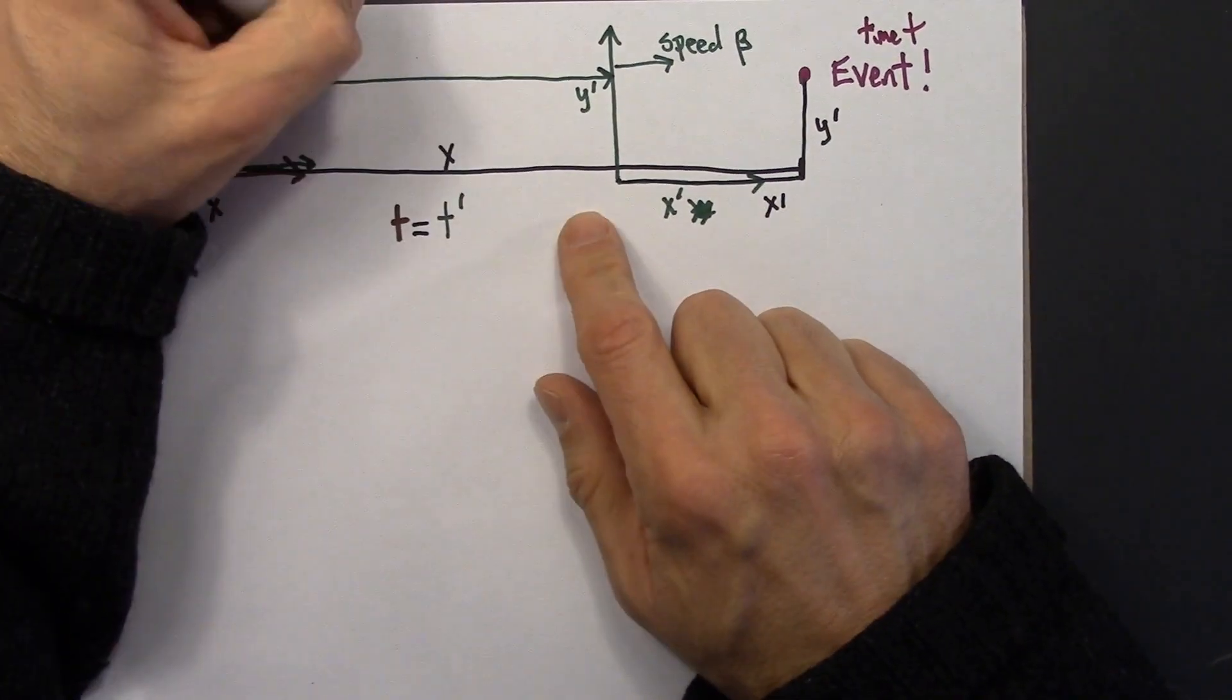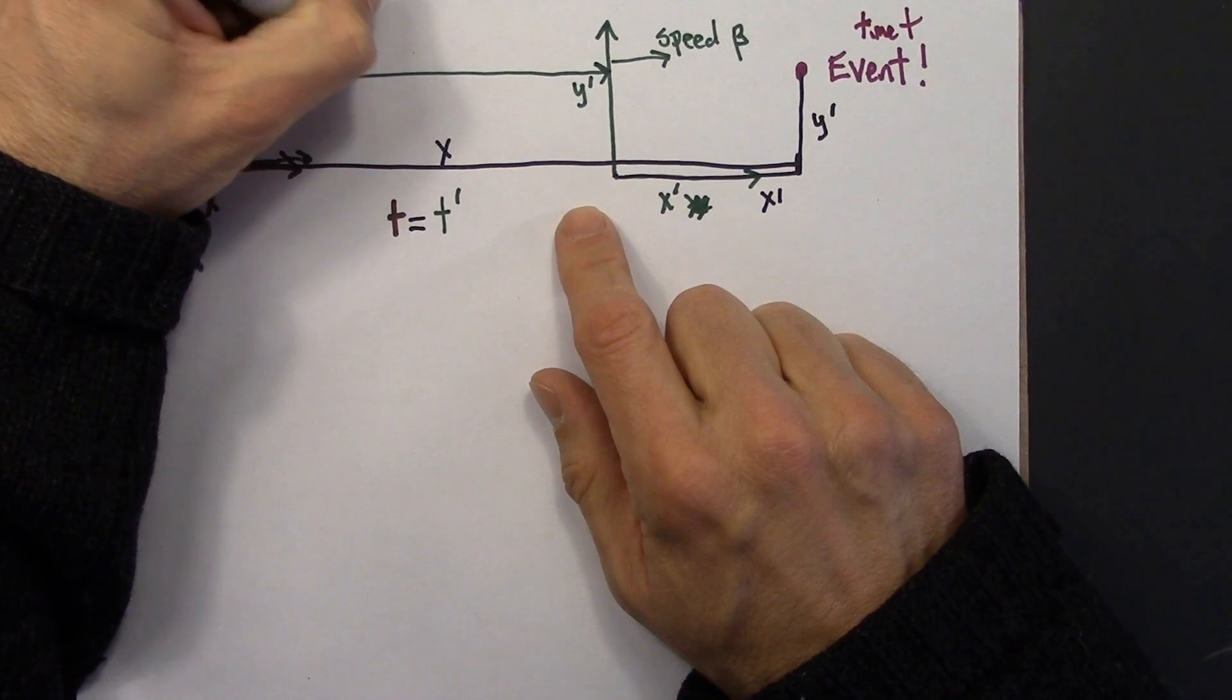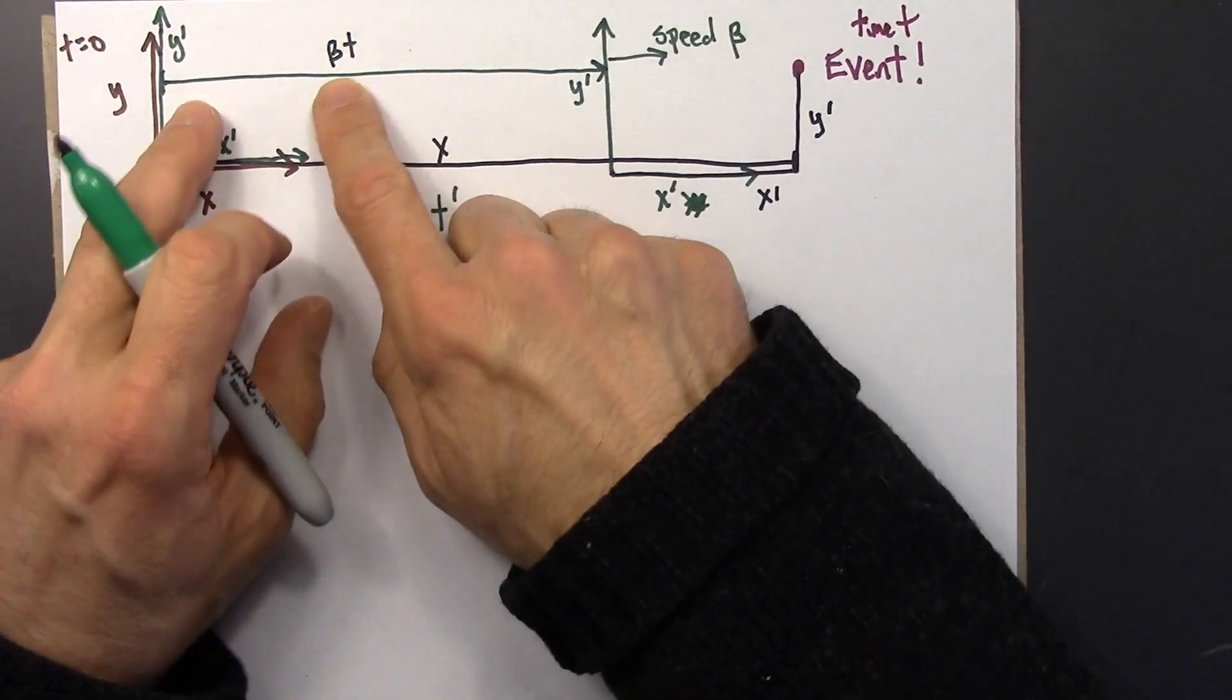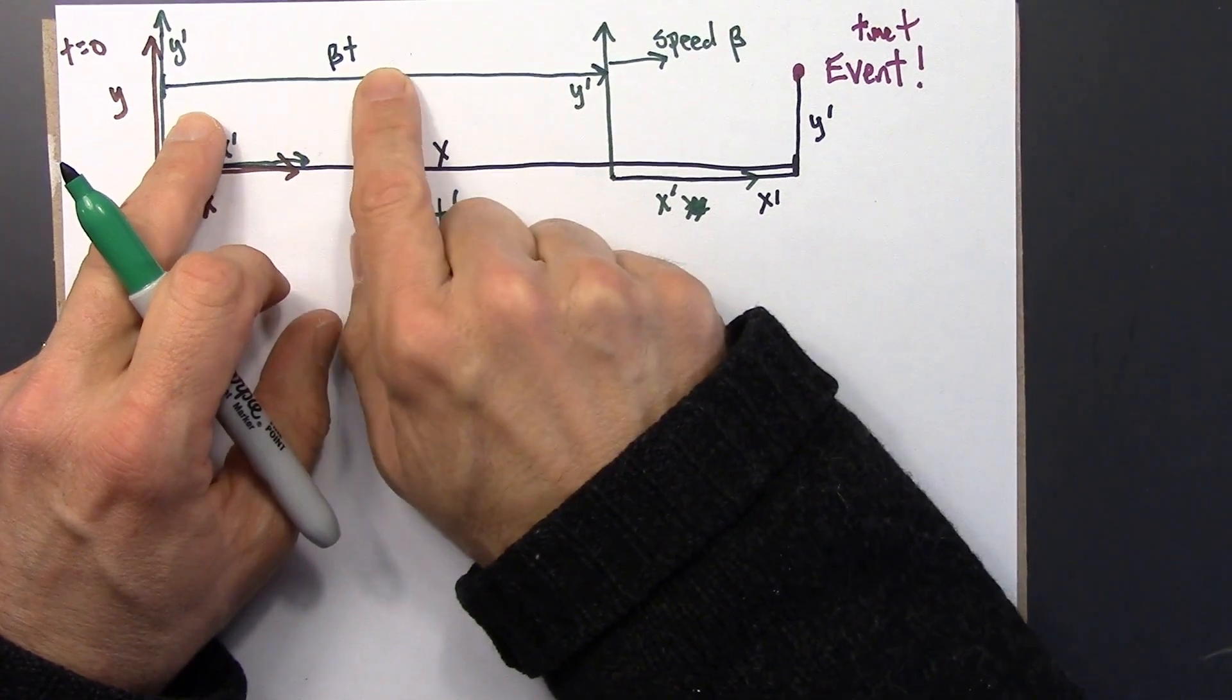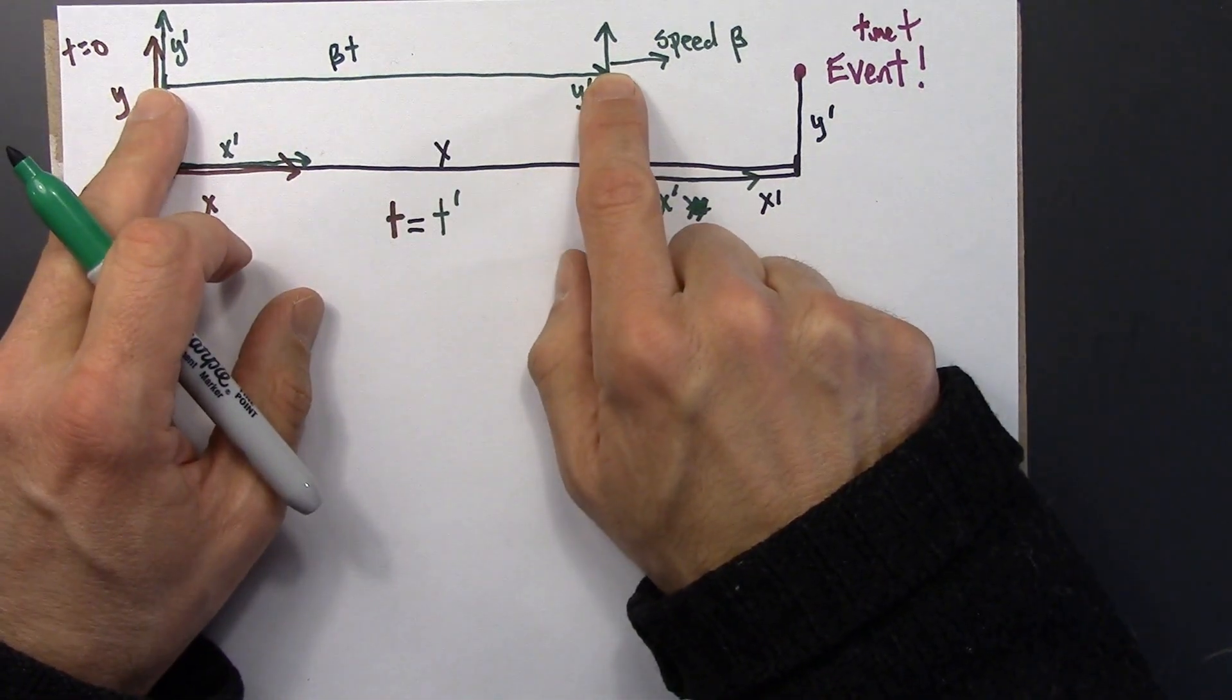this is going to be a distance of beta t. So distance equals rate times time. So if it's traveling at a speed of beta for t seconds, the distance is going to be beta t.